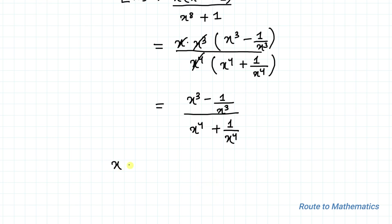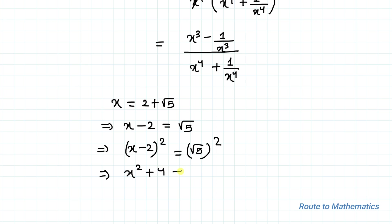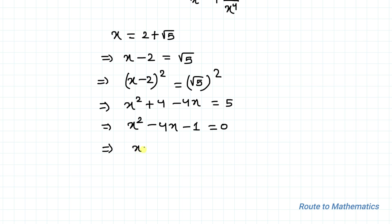Now, we have been given x = 2 + √5. Let's take 2 to the left hand side, giving x - 2 = √5. Squaring both sides: (x - 2)² = (√5)², which gives x² + 4 - 4x = 5. Taking 5 to the left hand side: x² - 4x - 1 = 0. This can be rewritten as x² - 1 = 4x.